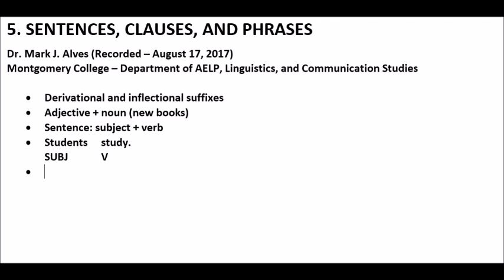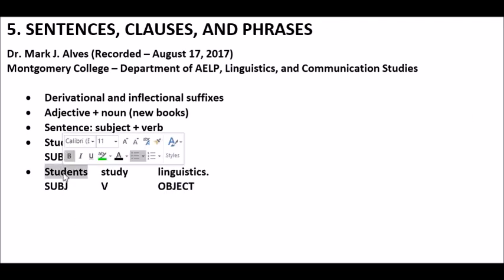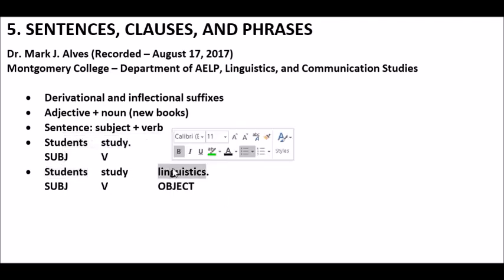Let's look at another sample sentence: 'students study linguistics.' In this case, we have a subject and verb, and we also have what's called an object. The noun subject 'students' comes in front of the verb, and the noun 'linguistics,' which is the object, goes after the verb. So far so good.